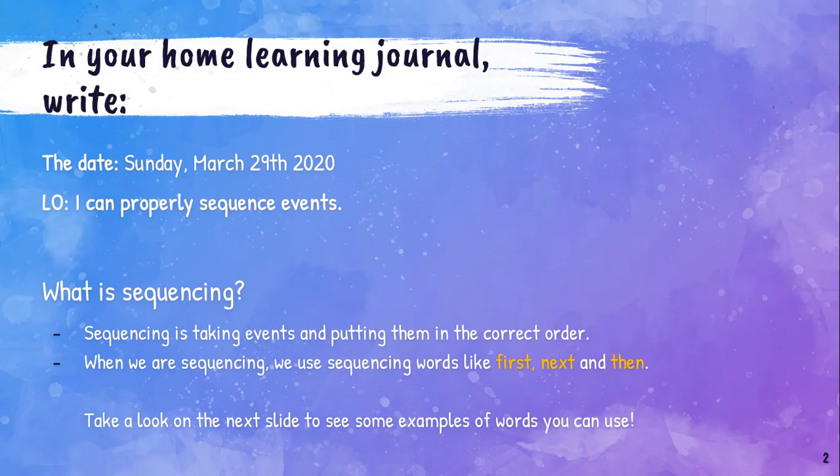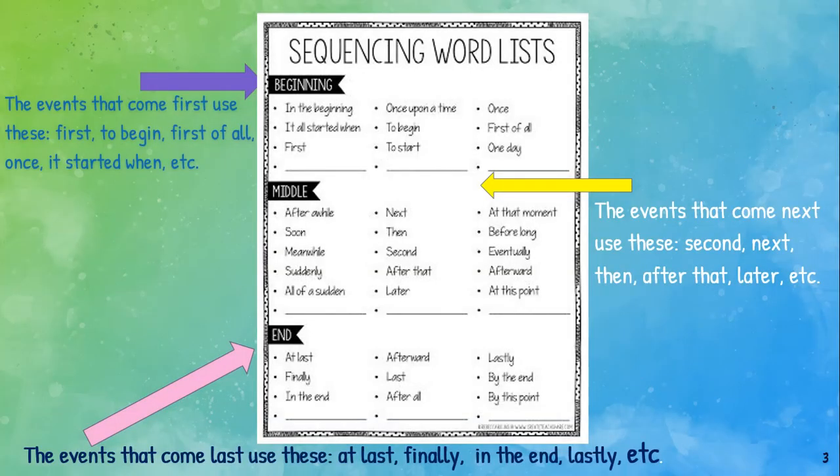We're going to look at some more words. Normally at the beginning, your sequencing words — the events that come first — are words like: first, to begin, to start, once upon a time, first of all, one day, it all started when, in the beginning. So there are some ideas for your writing there that you can write down, but remember you don't have to.